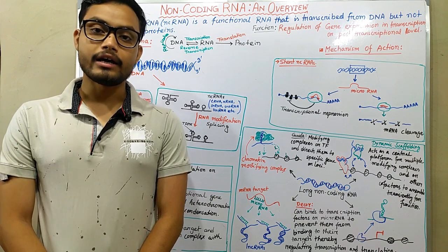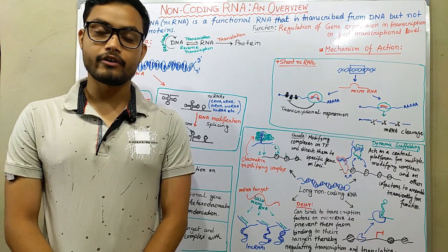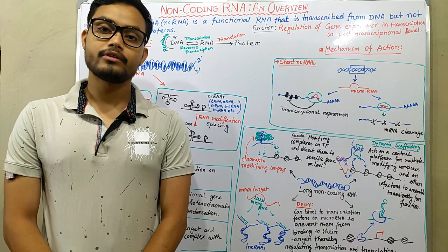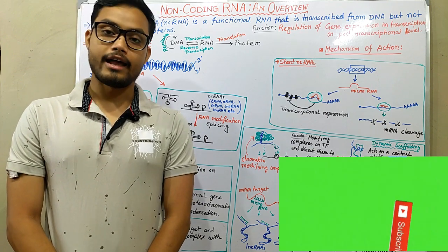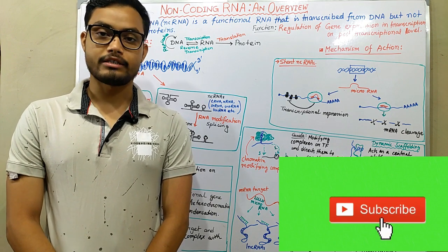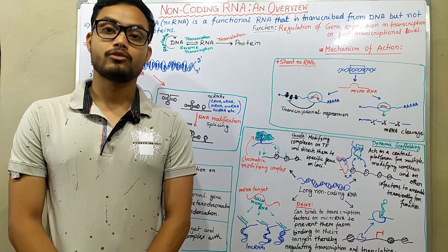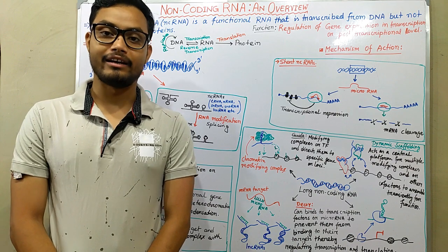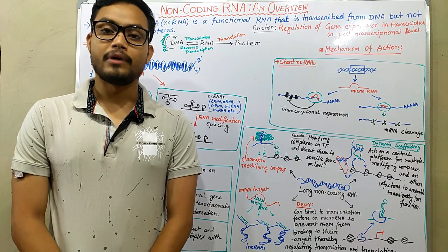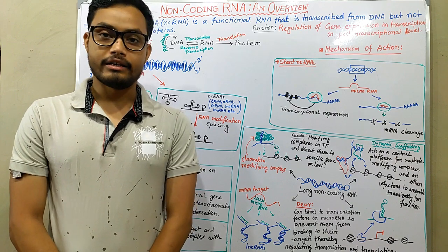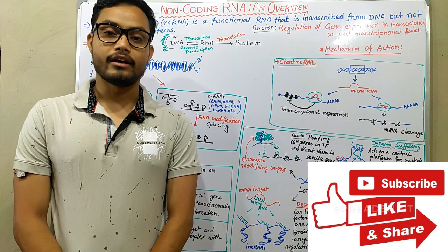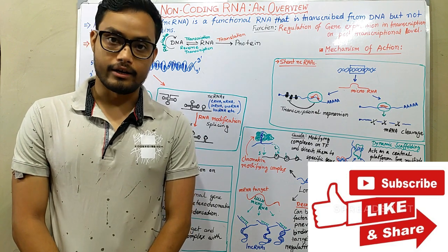When we study about the central dogma, we found that RNA is produced from DNA with the help of an enzyme known as RNA polymerase, by a process known as transcription. Those RNAs are further translated into proteins with the help of ribosomes. But not all RNAs can produce a particular protein, so these RNAs are known as non-coding RNAs.